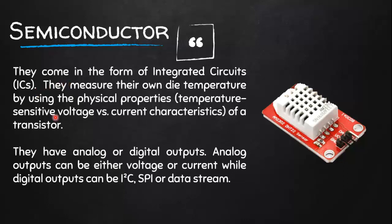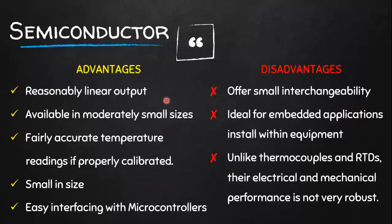Finally, semiconductor ICs come in the form of integrated circuits. They measure temperature using the physical properties — specifically the temperature-sensitive voltage versus current characteristics of a transistor. They can have analog or digital outputs. Analog output can be either voltage or current, while digital output can be I²C, SPI protocol, or digital data. The advantages include reasonably linear output with respect to temperature, availability in moderately small sizes, and they are fairly accurate over a wide temperature range if properly calibrated. They can also be very easy to interface with microcontrollers or Arduinos.